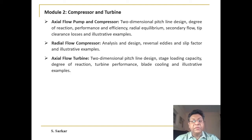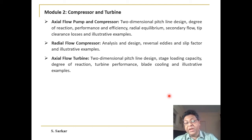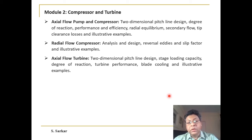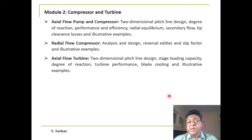Similarly, in Module 2, we will concentrate on flow through compressors and turbines. Here we will start with axial pumps and compressors, followed by radial flow compressors, and then axial turbines. We will be limited to two-dimensional pitch line design, degree of reaction, performance estimations, radial equilibrium, secondary flow losses, with illustrative examples.